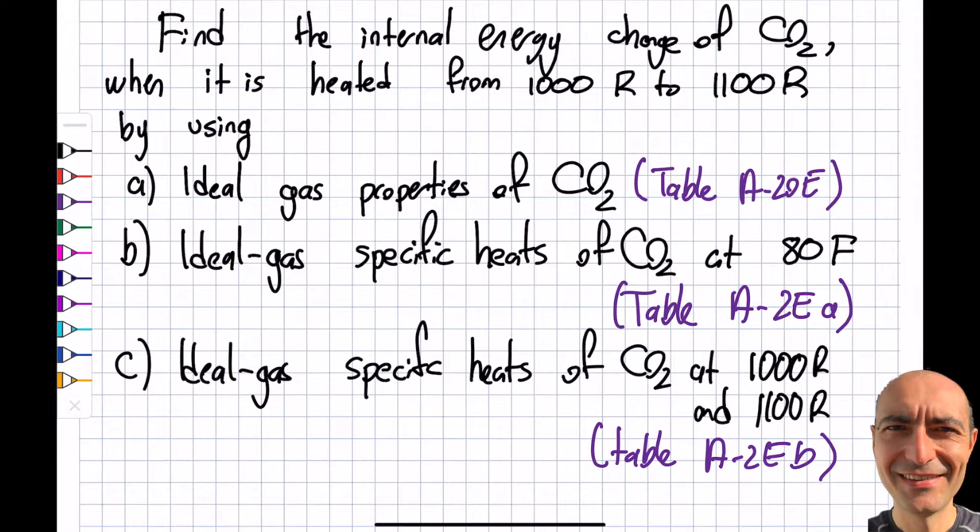Okay, I'm back with the question. In this question, I'm looking at the internal energy change of carbon dioxide. It is being heated from 1000 Rankine to 1100 Rankine, and I have options when I calculate the answer. I'm looking at three separate approaches. The first approach is ideal gas properties of CO2, and this will be the most accurate one. It's given as Table A-20E, E is for English units in Appendix 2 Çengel.